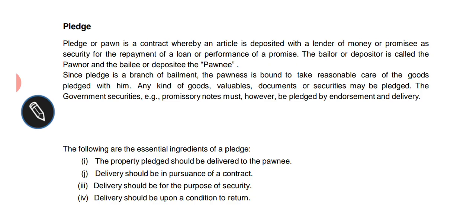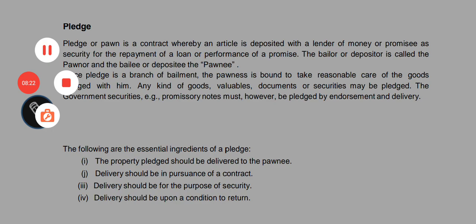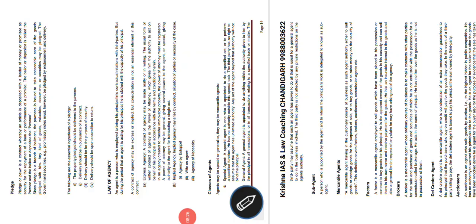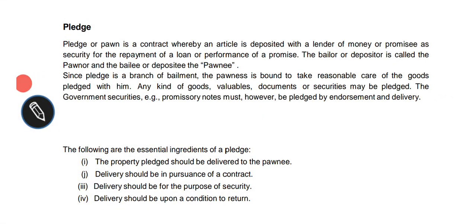First exception: pledge by a mercantile agent under Section 178. A mercantile agent who has possession of the goods with the owner's consent, but has no authority to pledge them, can still make a valid pledge, provided the pledgee or pawnee is acting in good faith.